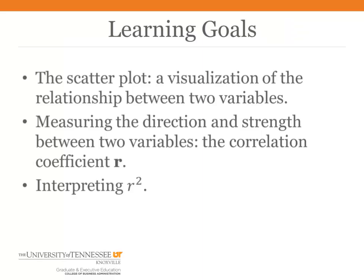Here are the tools that we will introduce. The first is the scatter plot or scatter diagram, which gives us a picture of the relationship between the variable that we are predicting and the new variable that we might want to use to improve our prediction. Visualization should always be the starting point for data analysis. If we do a scatter plot and see a linear relationship between two variables, then we will want to quantify the strength and direction of that relationship. By direction, I mean as one variable increases, does the other one increase or decrease? The correlation coefficient tells us both the strength and the direction of the relationship.